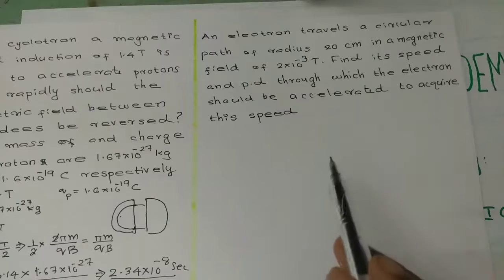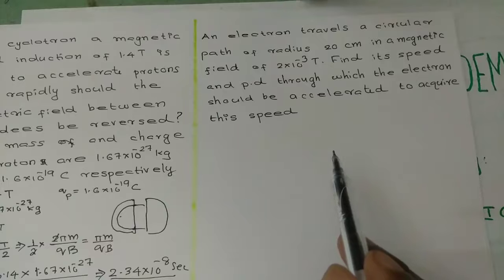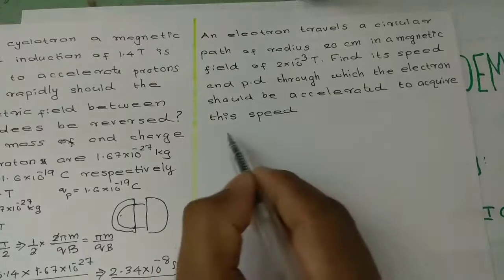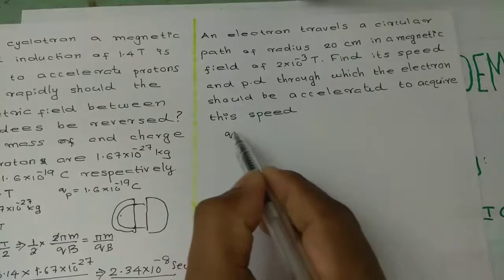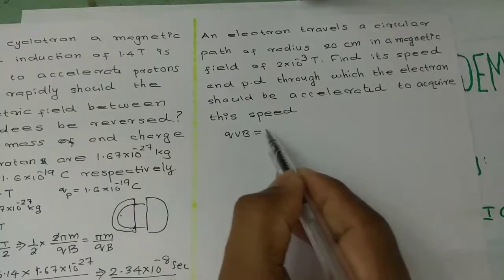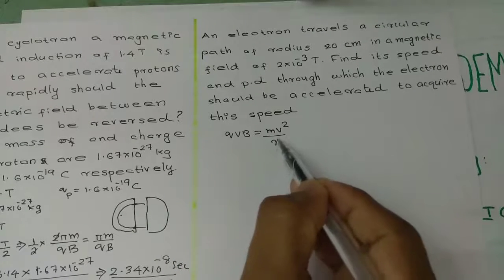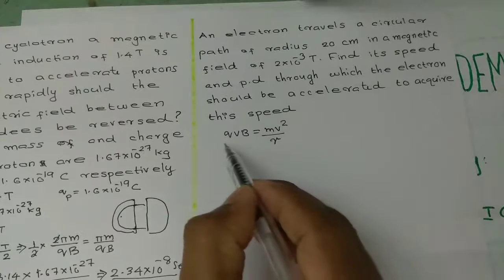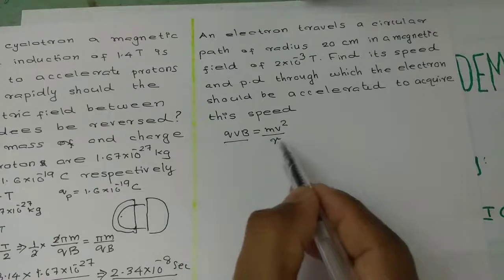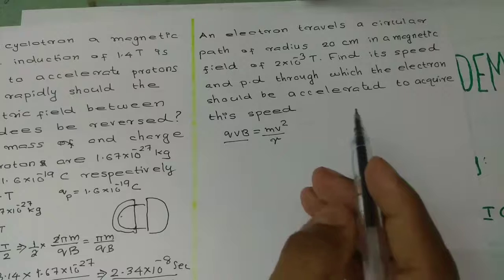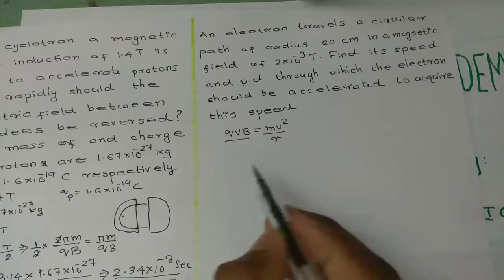We know that the magnetic force qvB on the electron acts as the centripetal force mv²/r. That is, we can write qvB = mv²/r, where qvB represents the magnetic force and mv²/r represents the centripetal force.